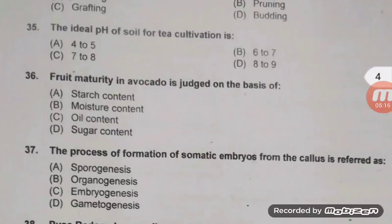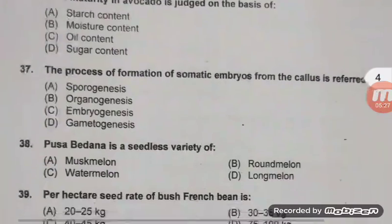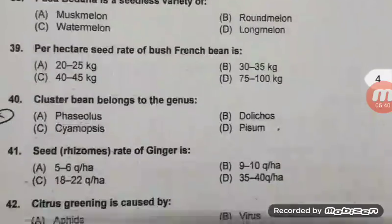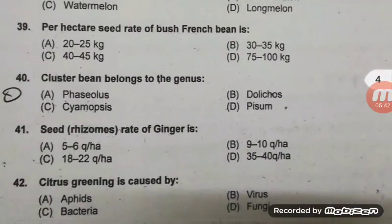Fruit maturity in avocado is judged on the basis of oil content — right answer C, not less than 8 percent at the stage of maturity. The process of formation of somatic embryo from the callus is referred to as direct embryogenesis — right answer C. Pusa Bedana is a seedless variety of watermelon — very common question.